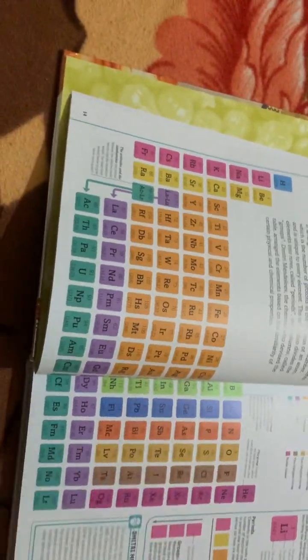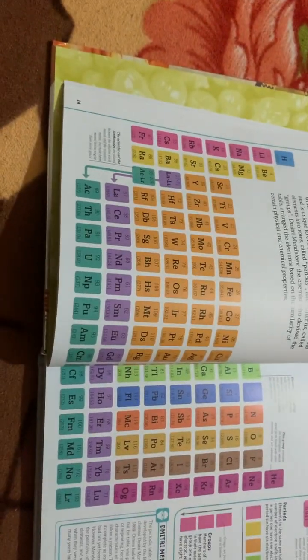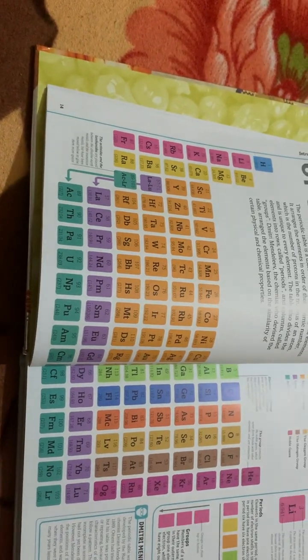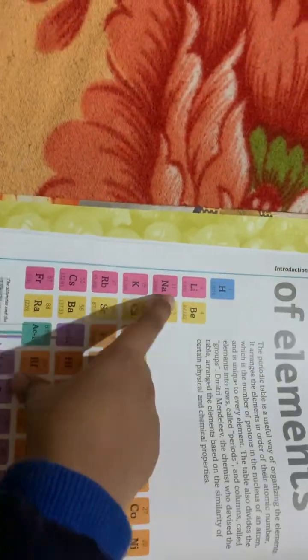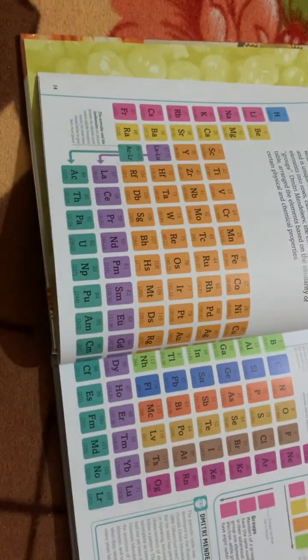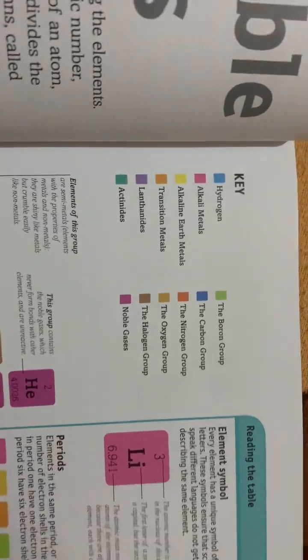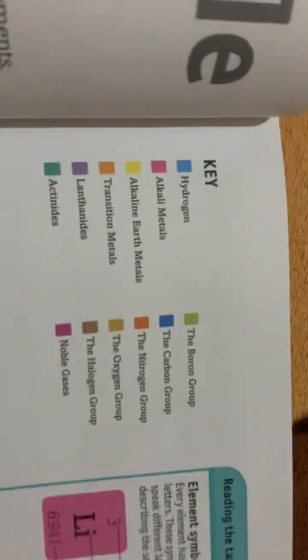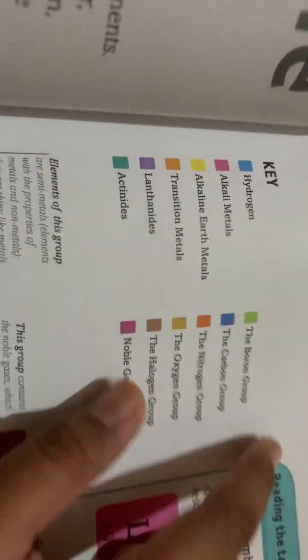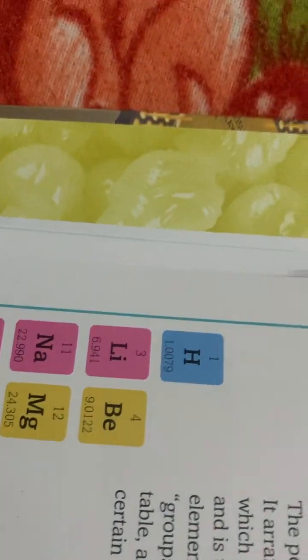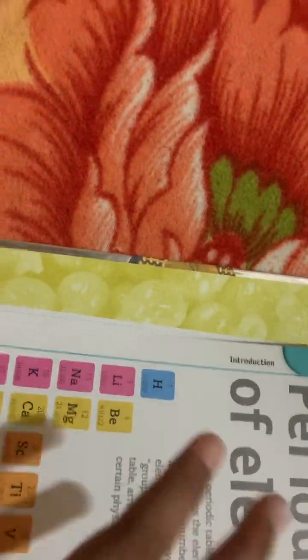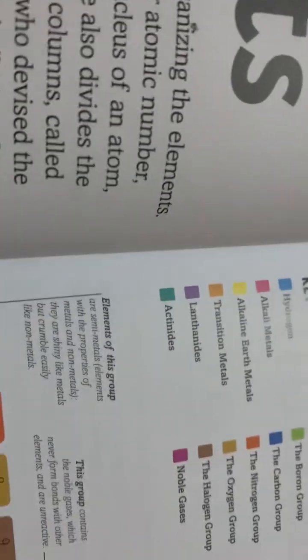The periodic table has a lot of sections which are demonstrated by these colors. This is the key. This can be different colors depending on which table you're using. The blue is hydrogen. Hydrogen is the first element.